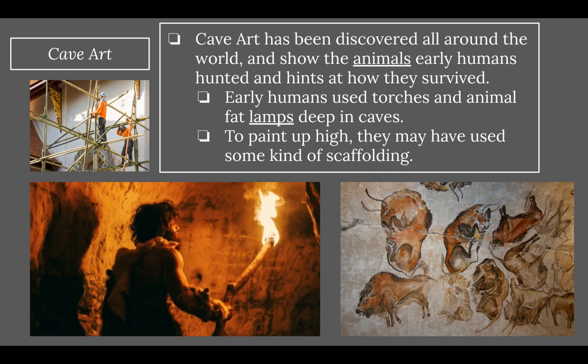To paint up high on cave walls, they may have used some kind of scaffolding. You can see on the top left a more modern scaffold, but early humans would have used very simple scaffolds to reach up high and paint on the walls.